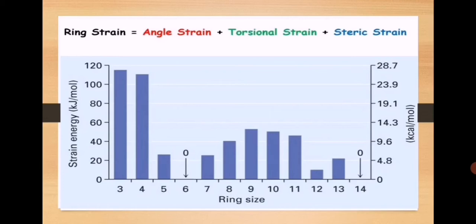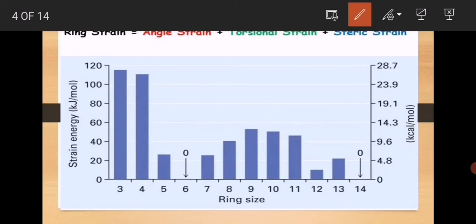Look, there is a graph being shown to you. On one axis, we have written the number of carbon atoms — the number of carbon atoms will increase: three, four, five, six. As the number of carbons increases, the ring size will increase.